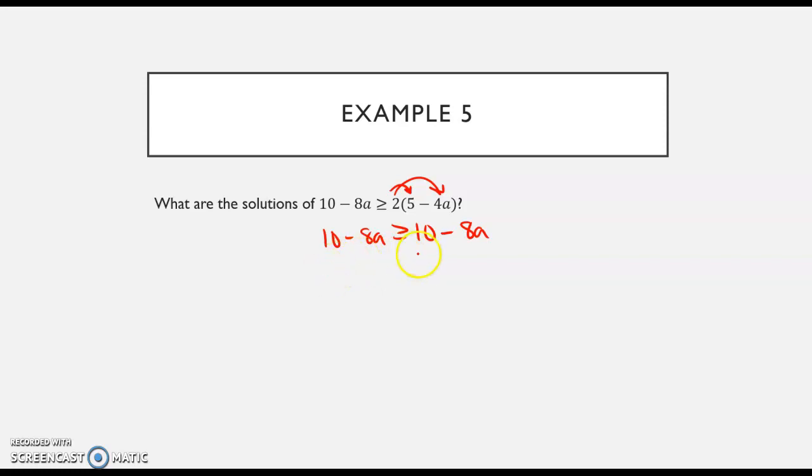I'm going to move my variables to the same side. So I'm going to add 8A to both sides and my A's disappear. So now I have 10 is greater than or equal to 10. And in this case, that is true. 10 is equal to 10. And so this is a true statement.